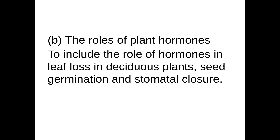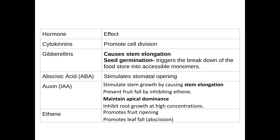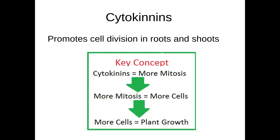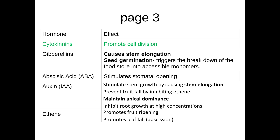Welcome biologists to this video where we're going to have a look at the role of plant hormones. Here is a table with all of the hormones you need to be aware of and their main impacts upon the plant. We're going to go through each one individually. The first one is cytokinins, and this one is involved with promoting cell division — basically mitosis — in the roots and the shoots.